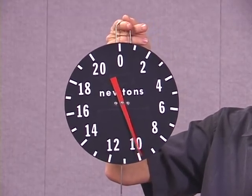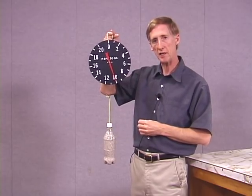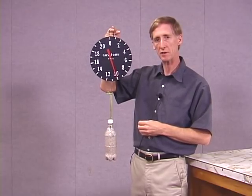We call that the apparent weight of the object. In other words, what the scale measures, the tension force, is the apparent weight. The true weight would be mg. The apparent weight in this case is mg plus the mass of the object times its acceleration.